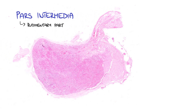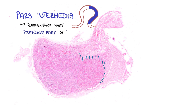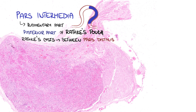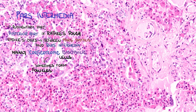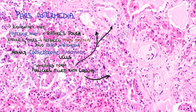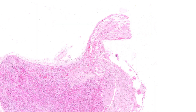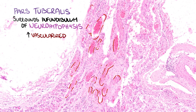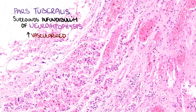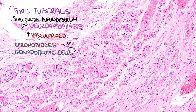Pars intermedia is a rudimentary part of adenohypophysis in humans, developed from the posterior wall of Rathke's pouch. Thus, Rathke's cysts are situated between pars distalis and pars intermedia of adenohypophysis. It is composed mainly of corticotropic basophilic cells, which sometimes form follicles filled with colloid. Pars tuberalis surrounds the infundibulum of neurohypophysis, which is highly vascularized. It contains predominantly chromophobes and gonadotropic cells which form cords around blood vessels and may also create follicles.